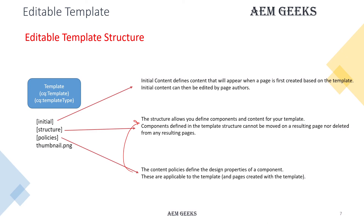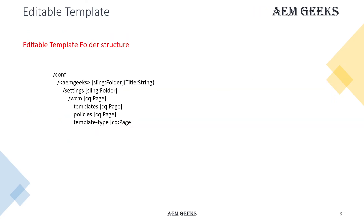Editable templates and all related content are stored in the /conf folder. You should create your own project-specific folder there. Under it you have settings, then wcm, and under wcm you have three nodes of type cq:Page: one for templates, one for template-types, and one for policies.